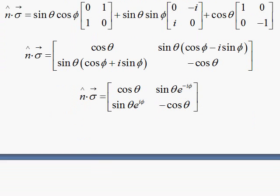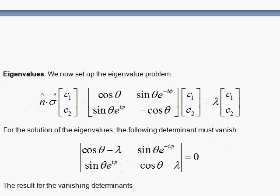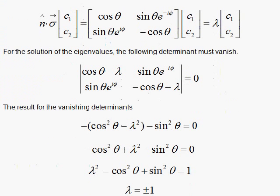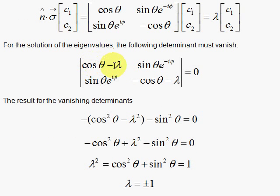Now we do the eigenvalue problem. The eigenvalue problem is set up by having our matrix hit the spinor and get the same spinor back with an eigenvalue. Remember the trick: you subtract lambda from the diagonal components, then make the determinant vanish. Thinking of this as (a minus b)(a plus b), you get a squared — cosine squared theta — minus b squared, minus lambda squared.